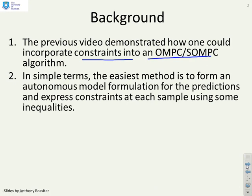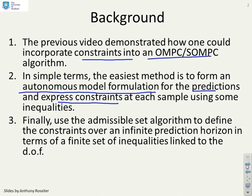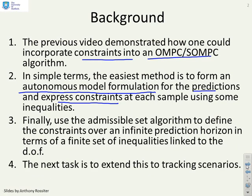The easiest method was to form an autonomous model which represented the predictions and then express constraints using the same state as you had in this autonomous model. Then we used the admissible set algorithm to define the constraints over the infinite horizon. What we need to do now is extend this scenario to deal with tracking scenarios.